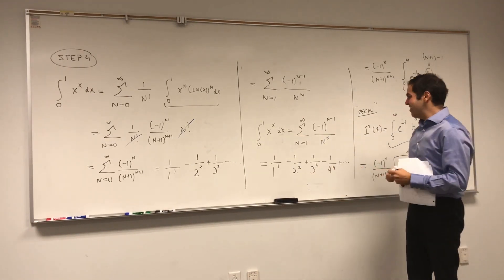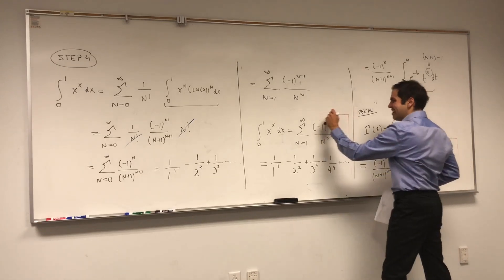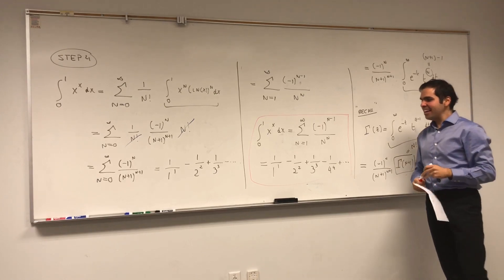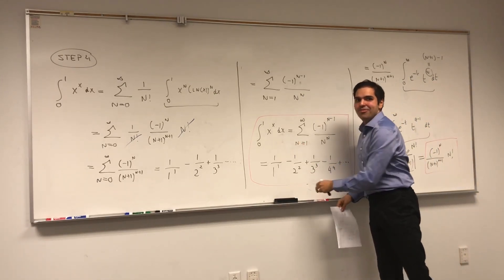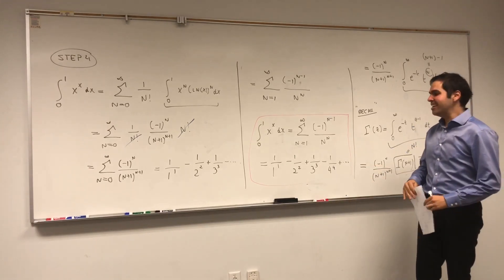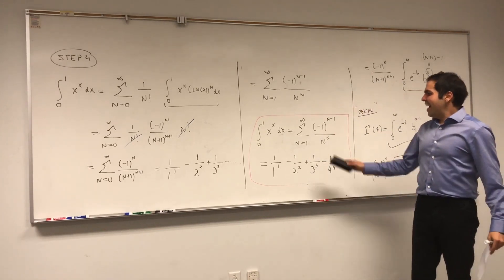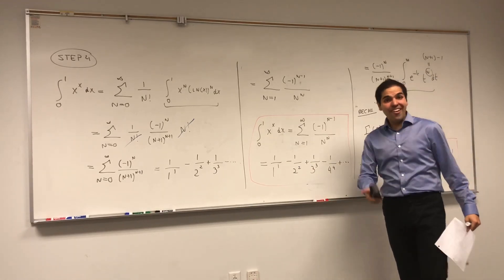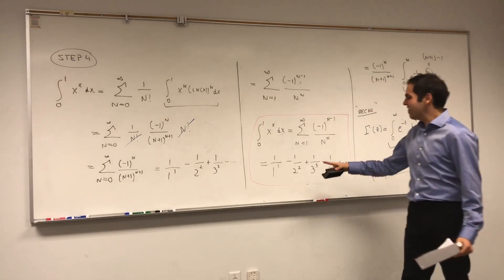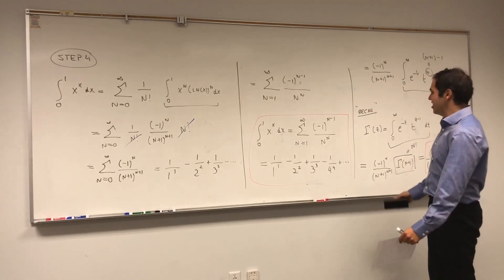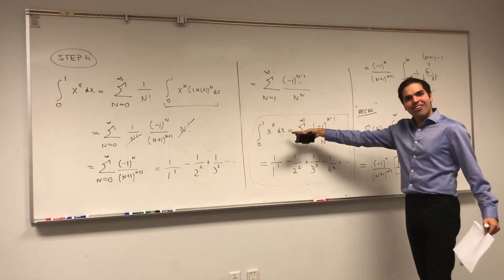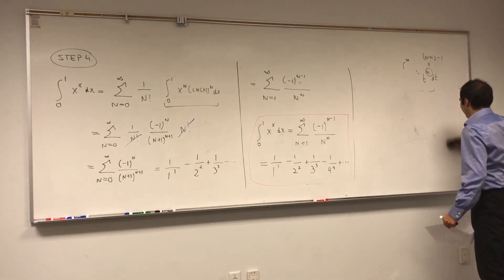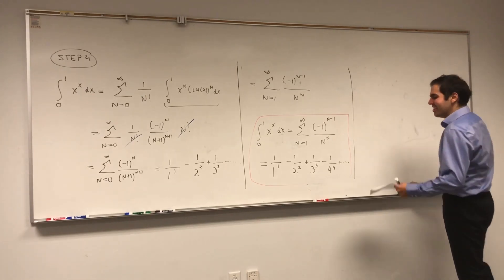With a change of variables, you can transform this sum into the sum starting from 1 to infinity of minus 1 to the (n minus 1) over n to the n. So the integral from 0 to 1 of x to the x dx equals this very nice sum: 1 over 1 to the 1, minus 1 over 2 squared, plus 1 over 3 cubed, minus 1 over 4 to the 4, et cetera. Although we didn't evaluate this in closed form, we have this really cool result where the alternating sums of 1 over n to the n equal this integral — and you can even define the integral that way.